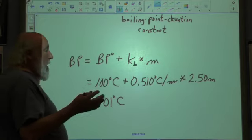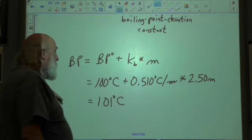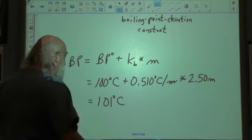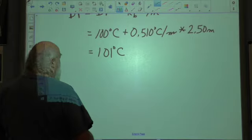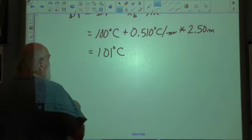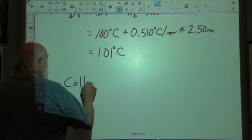Okay, so that's how we can calculate the new boiling point when you add stuff to it. Like I said, this is called boiling point elevation and freezing point depression are called colligative properties.